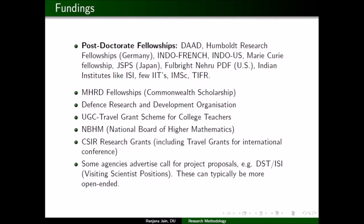The National Board for Higher Mathematics (NBHM) has fellowships for PhD and MSc students, fellowships to attend conferences abroad, and postdoctoral fellowships (PDFs). CSIR also provides research grants including travel grants for international conferences, in addition to the well-known JRF and SRF schemes. Some agencies like DST and ISI also advertise visiting scientist positions, where you can go and work for three to six months.